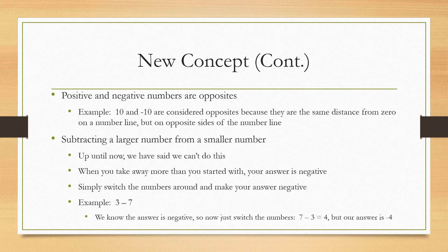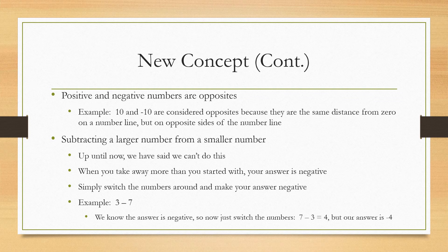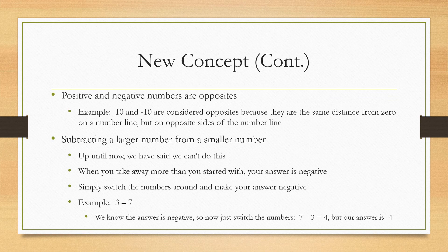So now you can just switch the two numbers around and subtract, and you know your answer is 4, but since it was 3 minus 7 at the beginning, it's negative 4. So that kind of goes back to positive and negative numbers being opposites. Your answer is going to be opposite when you switch the two numbers around.